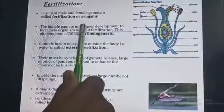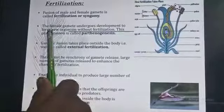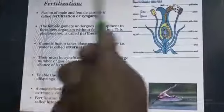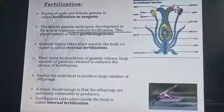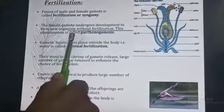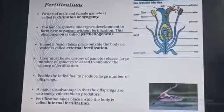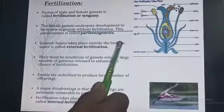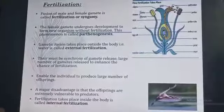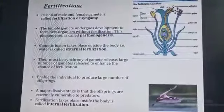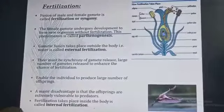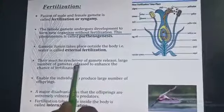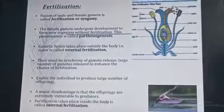When the female gamete undergoes development into a new organism without fertilization, this phenomenon is called parthenogenesis. When gamete fusion takes place outside the body, it is called external fertilization. There must be synchronicity of gamete release, and a large number of gametes must be released to enhance the chance of fertilization.